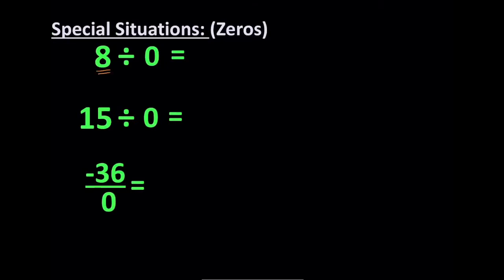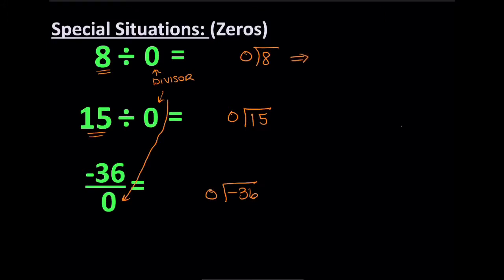In this example, all the dividends, all the numbers that we're dividing by are non-zero numbers. But the divisor, that's the number you divide by, the divisor is zero. So if I were to write this out as a division problem like this, it'd be eight divided by zero. This would be 15 divided by zero. This would be negative 36 divided by zero. So when you divide by zero, that's a huge deal in mathematics. What that comes out to is no solution. No solution. It's also called undefined. That's another way to state that answer. But that is not to be confused with zero. That is not the same thing as zero.